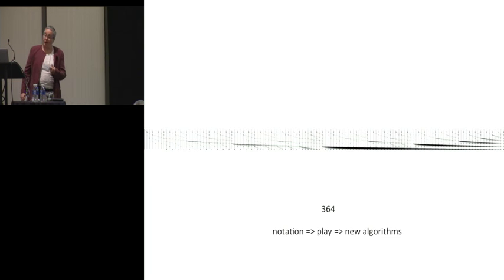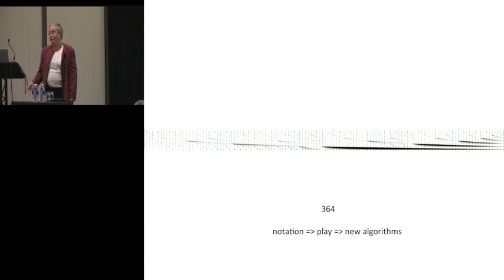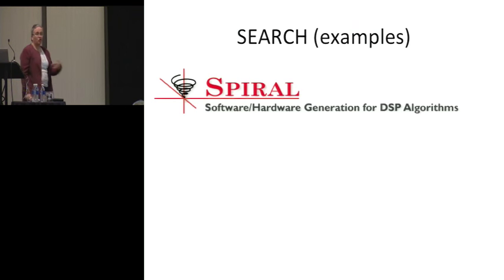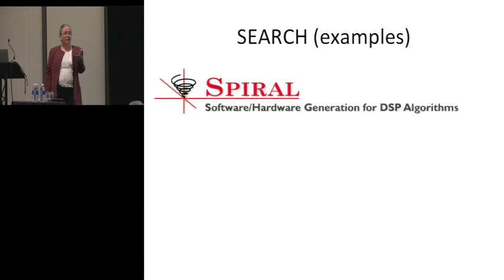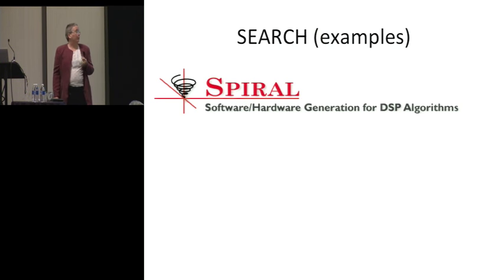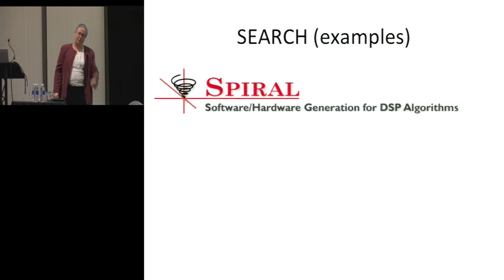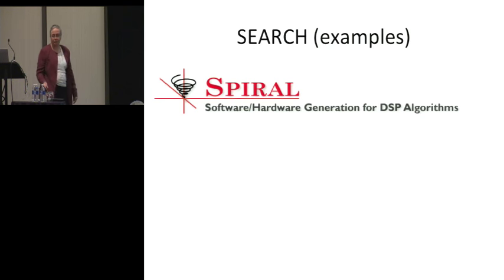Search is a fantastic help in discovering new things. One example is Spiral — an approach in which they have a small DSL for expressing networks and the algebra of networks, and they search for good implementations by applying algebraic laws. They generate circuits and various kinds of low-level code. They have a great website that should be guiding all of us about how to present research well. Please look at that.